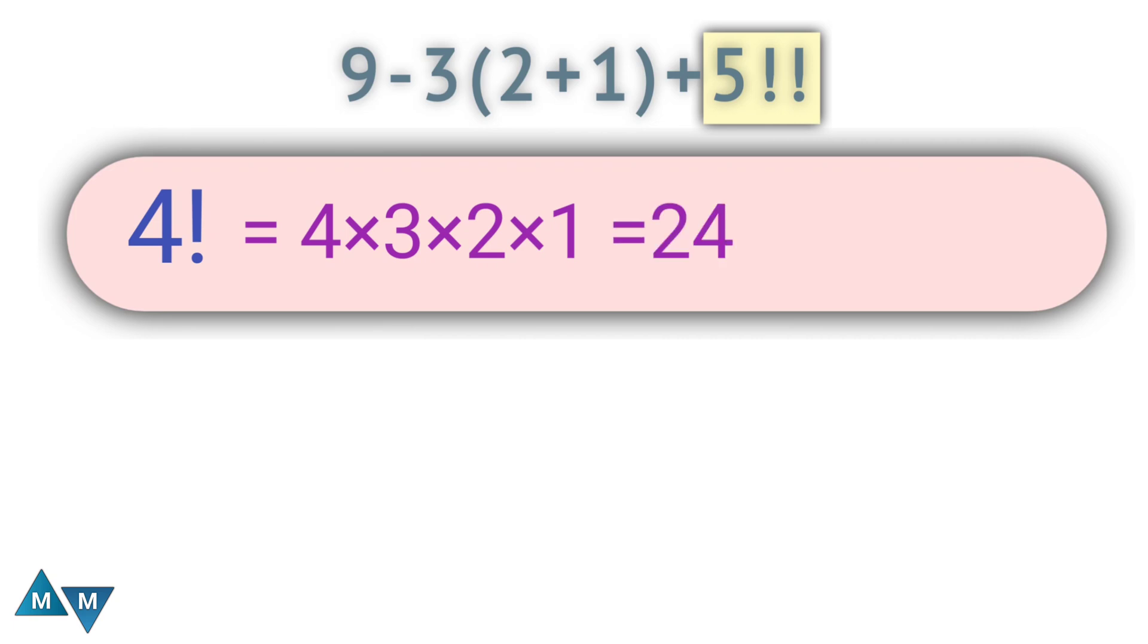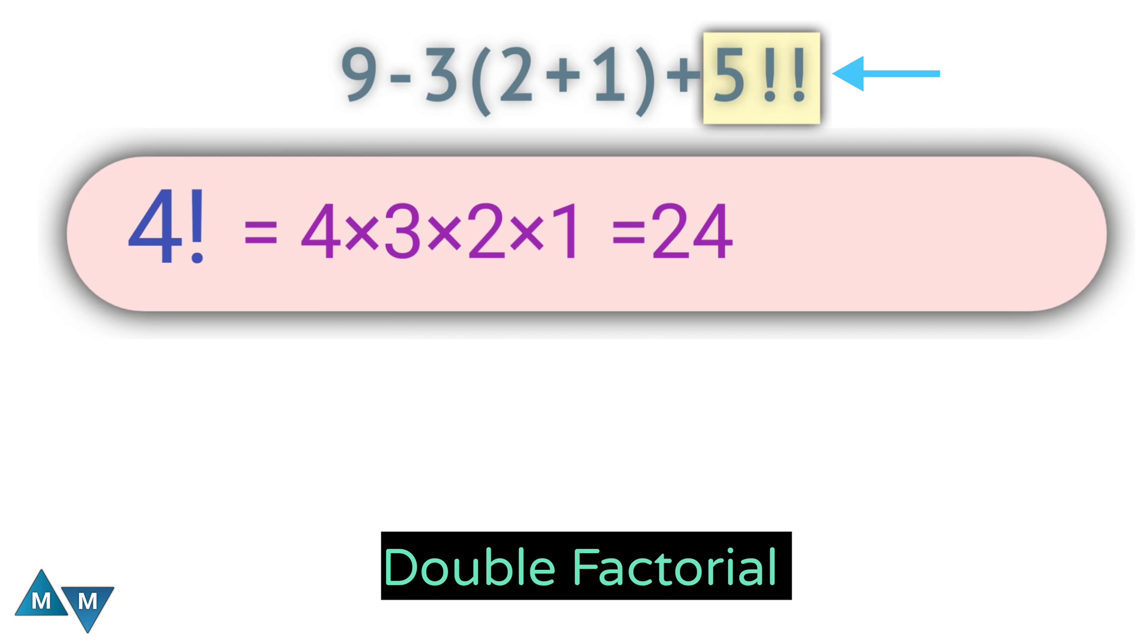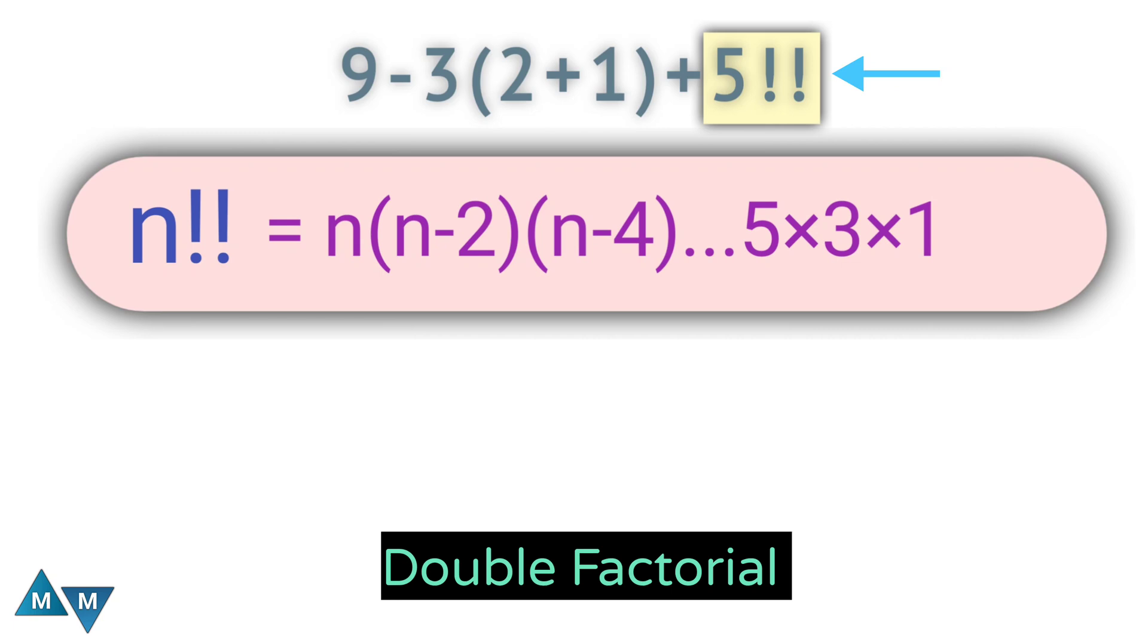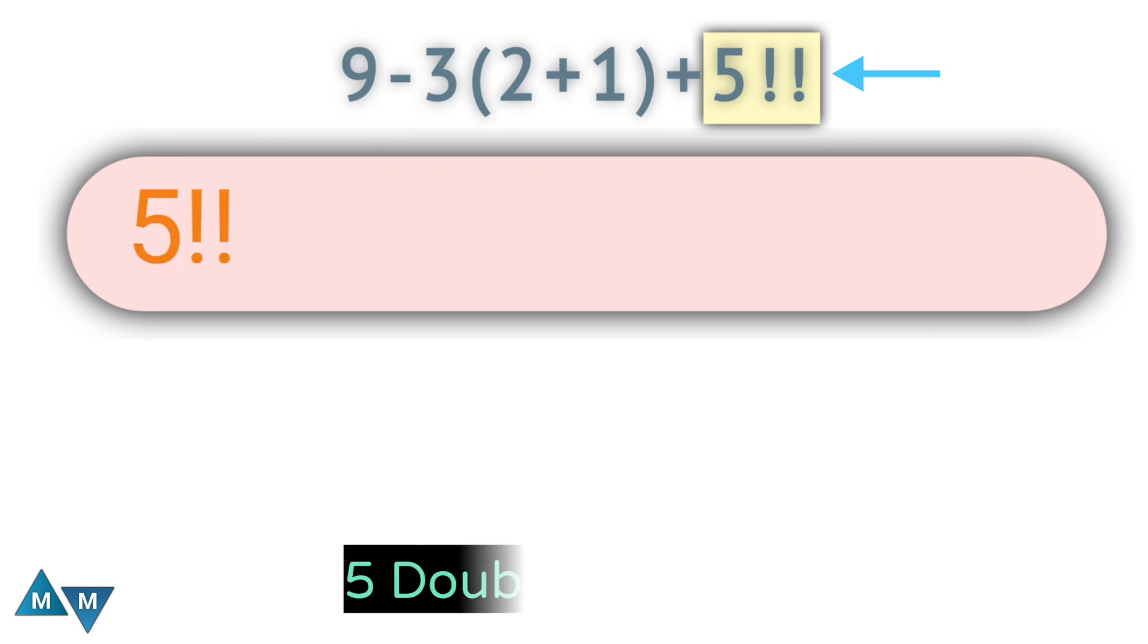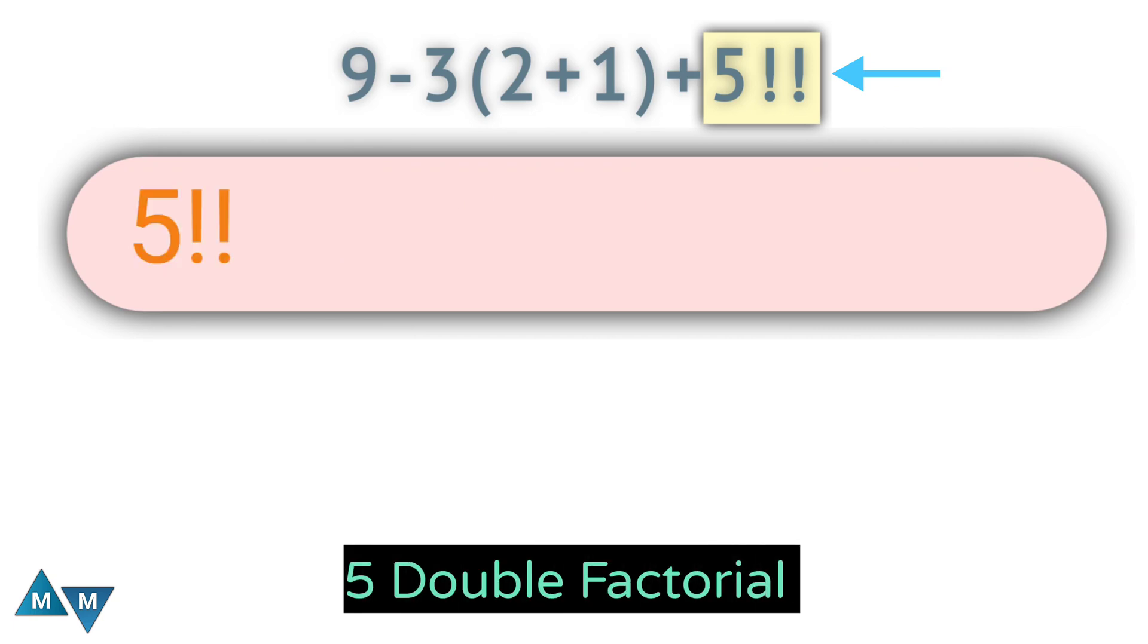But here we have double factorial. Now, the double factorial of a number n is the product of all the positive integers up to n that have the same parity as n. For example, 5 double factorial can be written as 5 times 3 times 1, which equals 15.